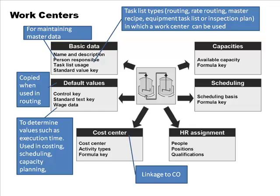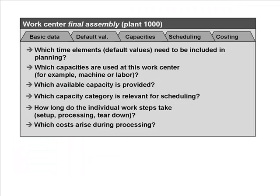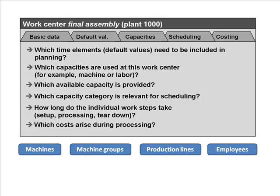The student asks whether these translate into different tabs on the work center screen. The instructor confirms: the next slide shows them coming as tabs — basic data, default values, capacity, scheduling, and costing. The work center could be any of these, including production lines for assembly-level manufacturing.